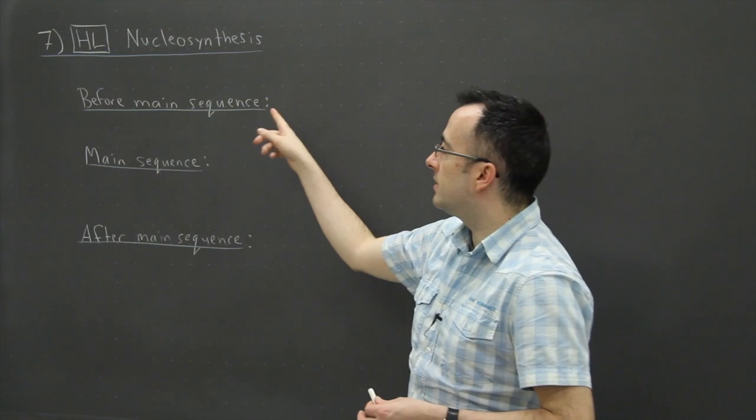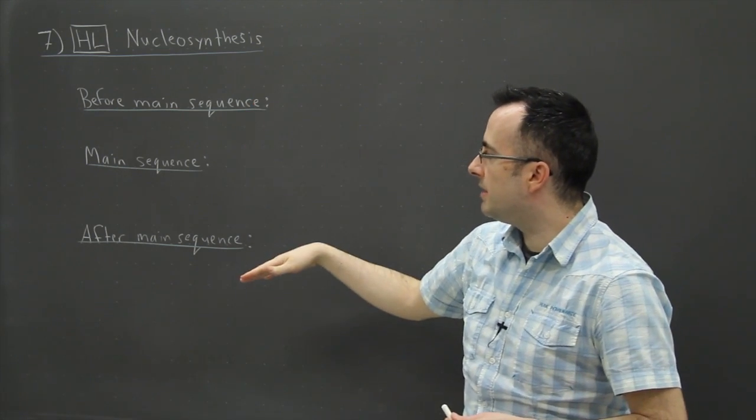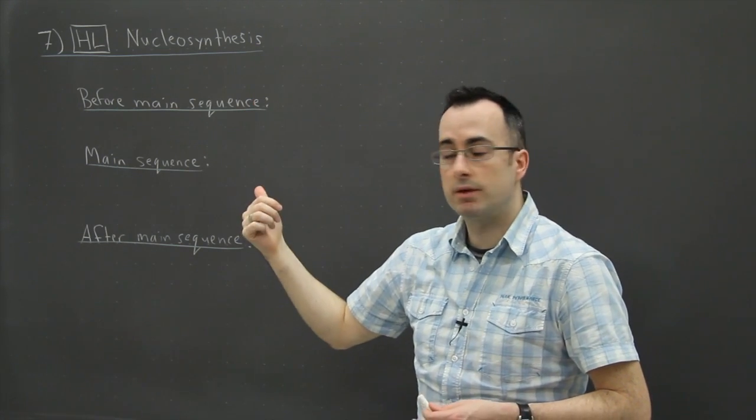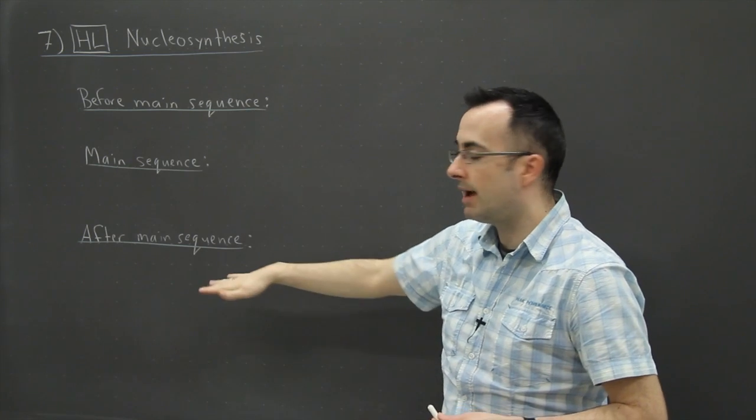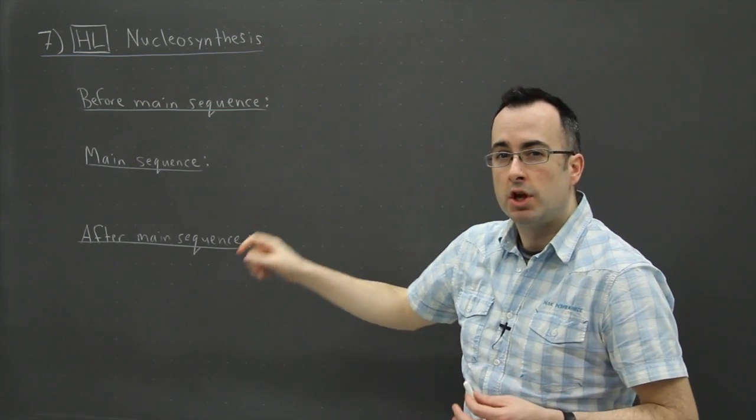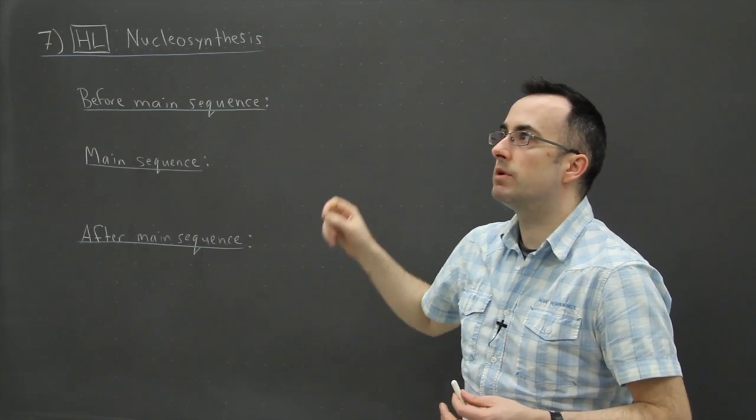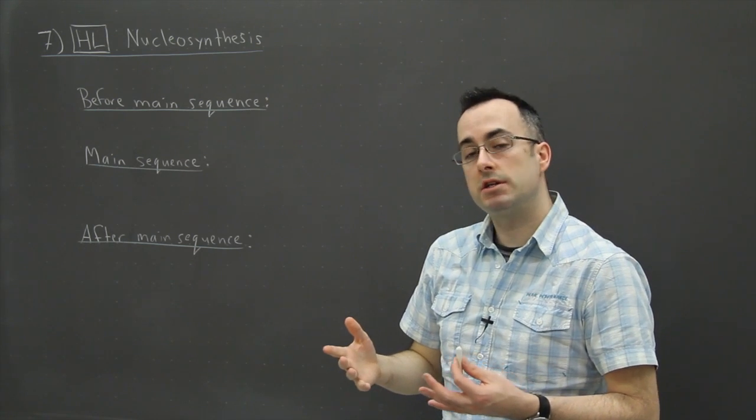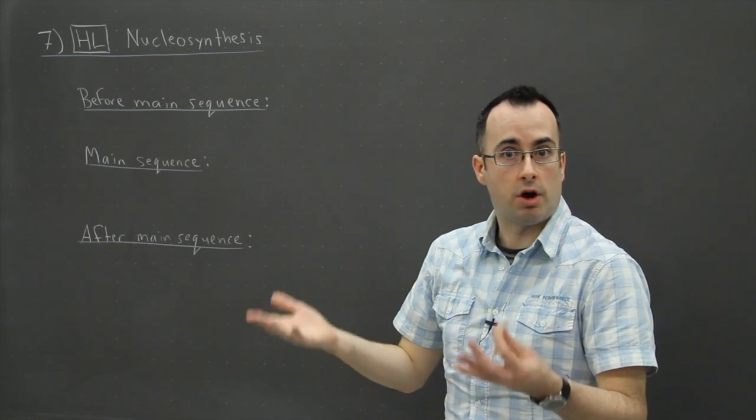So first of all we have three main things. We have before the main sequence, during main sequence, and after main sequence. So before main sequence, here we're starting talking about the conditions needed to start having a star.